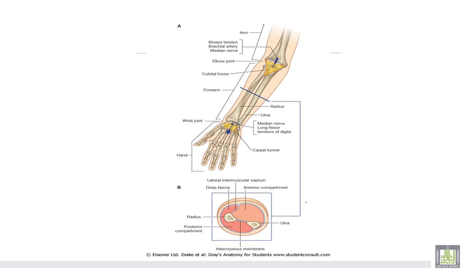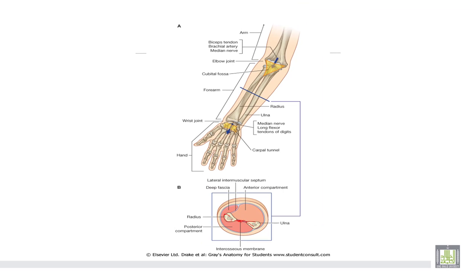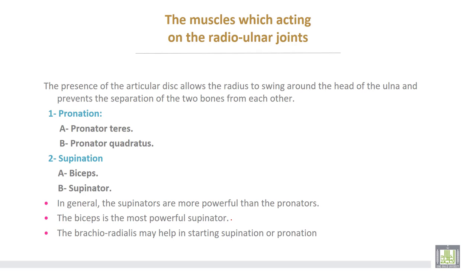This shows both bones — this is the ulna and this is the radius — and the interosseous membrane forming the fibrous joint or mid radio-ulnar joint.